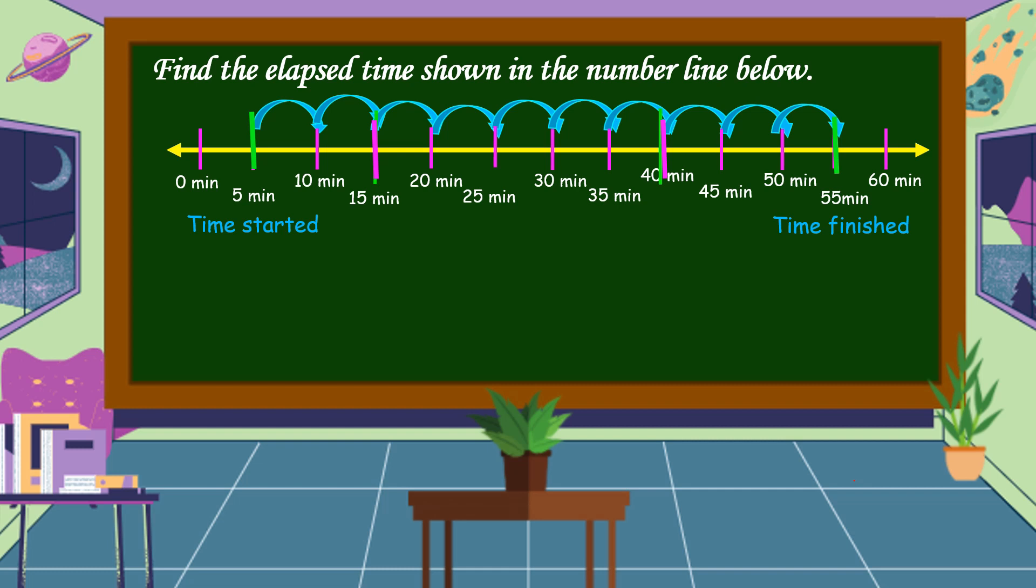We can use also subtraction. Time finished at 55 minutes minus 5 minutes time started. So, 5 minus 5 is equal to 0, bring down 5. Therefore, the elapsed time is 50 minutes.